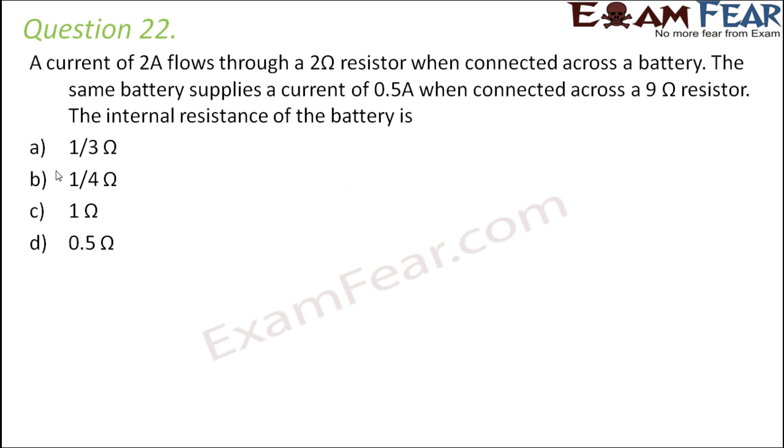Question number 22: A current of 2 Ampere flows through a 2 Ohm resistor when connected across a battery. The same battery supplies a current of 0.5 Amperes when connected across a 9 Ohm resistor. The internal resistance of the battery is: